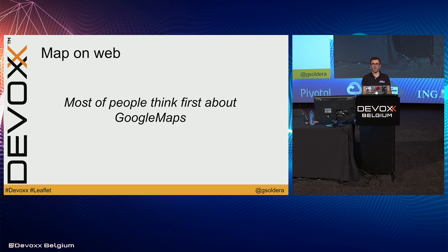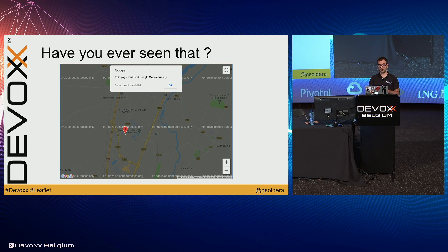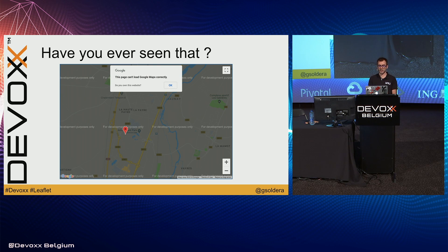When we talk about maps on the web, most people think first about Google Maps. But recently Google has updated its terms of service and it was not very pleasant. Now you must register your credit card and you need an API key to avoid that warning screen.